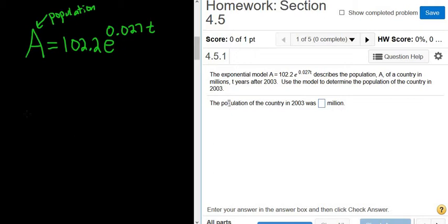Okay, so let's say we wanted to find the population of the country in 2004 instead. 2004 is one year after 2003, so we would plug in one. If it was 2007, then that's four years after 2003, so we'd plug in four. So we want the population in 2003.